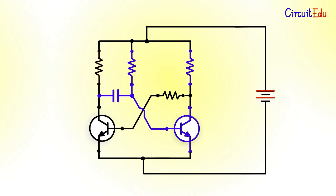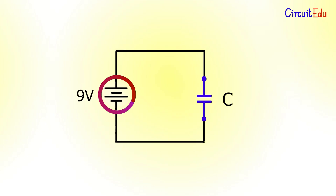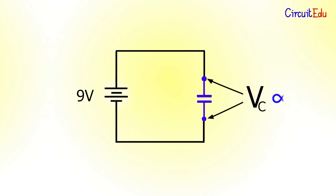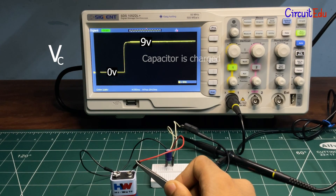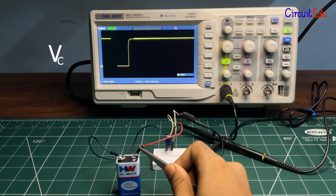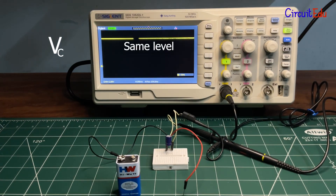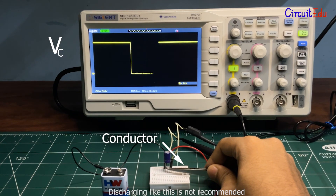Let's understand the purpose of the capacitor. If I connect it across a voltage source such as a 9V battery, the capacitor charges and the voltage across it is proportional to the charge stored. Voltage across the capacitor rises and reaches the supplied voltage, which is 9V. We can say the capacitor is charged. Now even if the voltage source is removed, voltage across the capacitor remains at the same level — until you short the two leads using a conductor, which immediately discharges the capacitor.